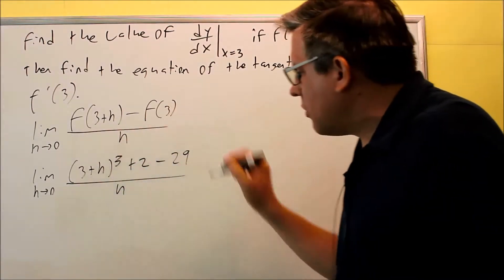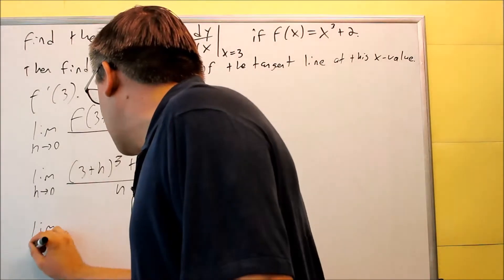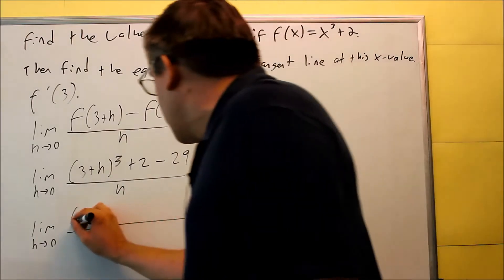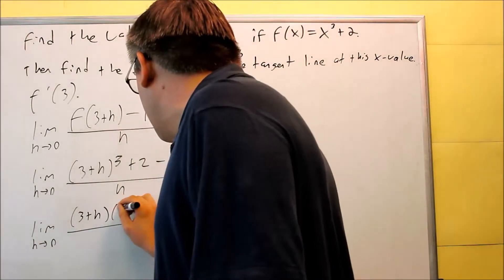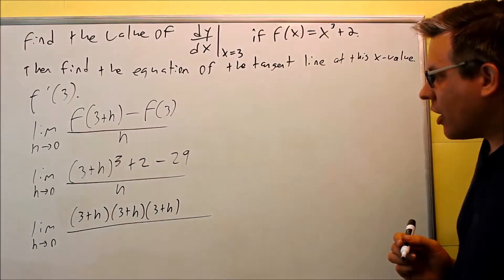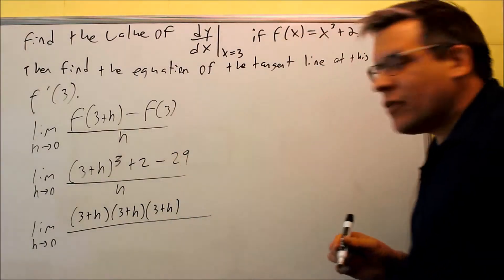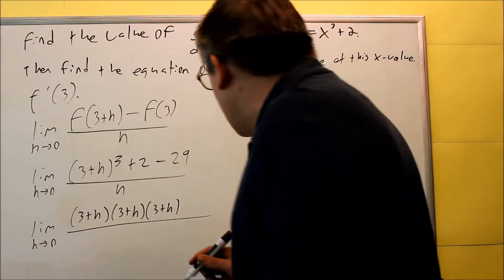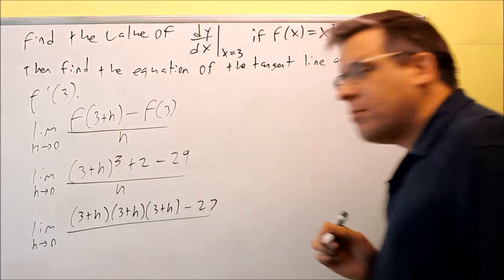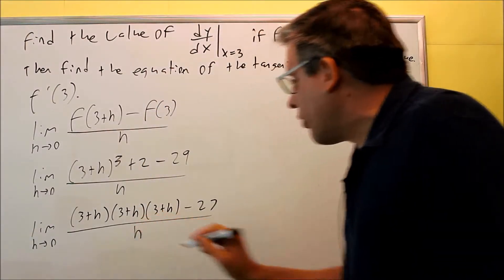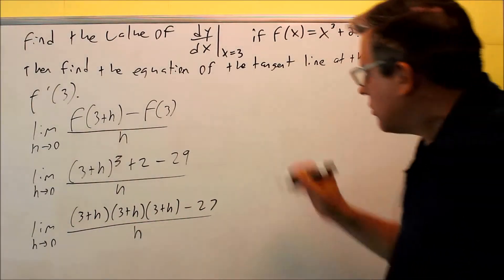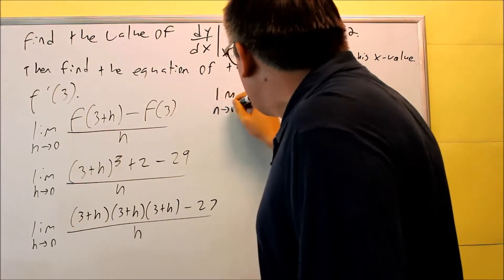Now, it's just a matter of expanding all this out and simplifying it. 3 plus h cubed, remember when you do that kind of problem, you're multiplying 3 of these together. So we're going to do 3 of those together and then I have negative 29 plus 2. And so when I add 2 to it, then I'm going to get negative 27. All that's going to be over h. We need to multiply all this out.